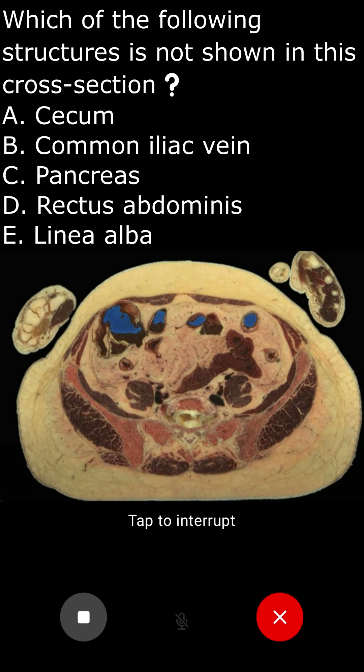Reason 4: Rectus abdominis. This is a long muscle that runs vertically along the anterior wall of the abdomen and is visible in cross-sectional images of the abdomen. Reason 5: Linea alba. This is a fibrous structure that runs down the midline of the abdomen, separating the left and right rectus abdominis muscles. It is visible in cross-sectional images of the abdomen.